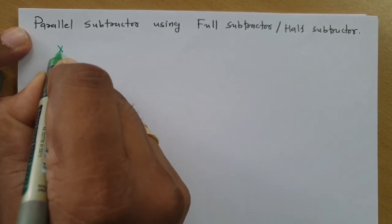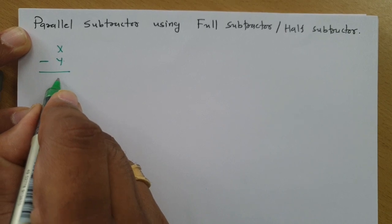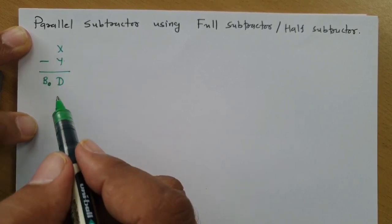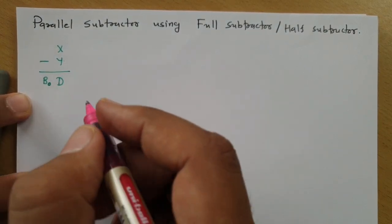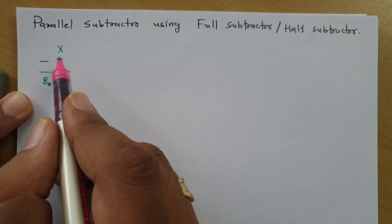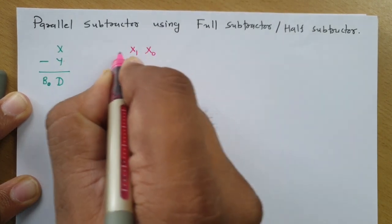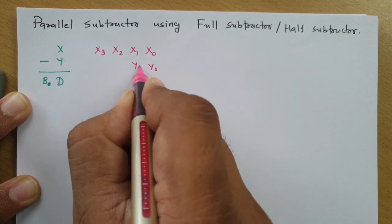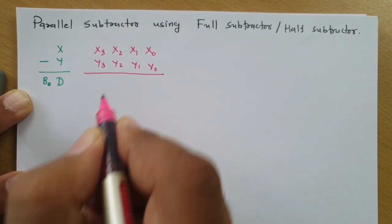If I have data X and Y and I want to perform subtraction, there is a difference and a borrow. In parallel subtractor, we have parallel binary data. Here I'll be considering 4-bit binary data instead of X and 4-bit binary data instead of Y. So if I have X as X0, X1, X2, and X3, and Y as Y0, Y1, Y2, and Y3, our agenda is to perform subtraction operation.